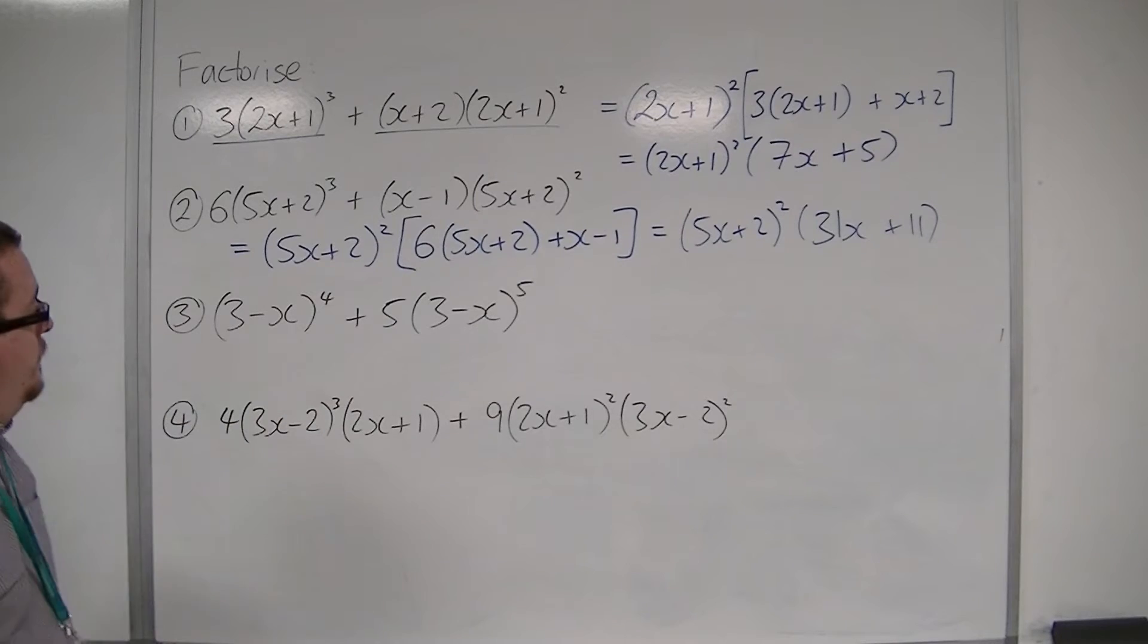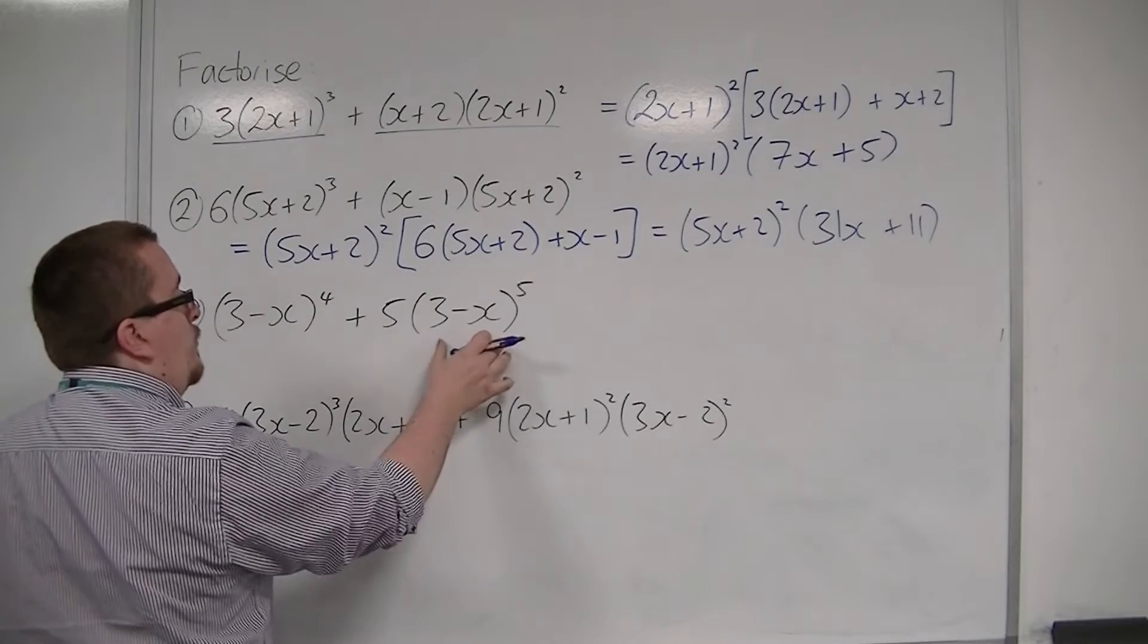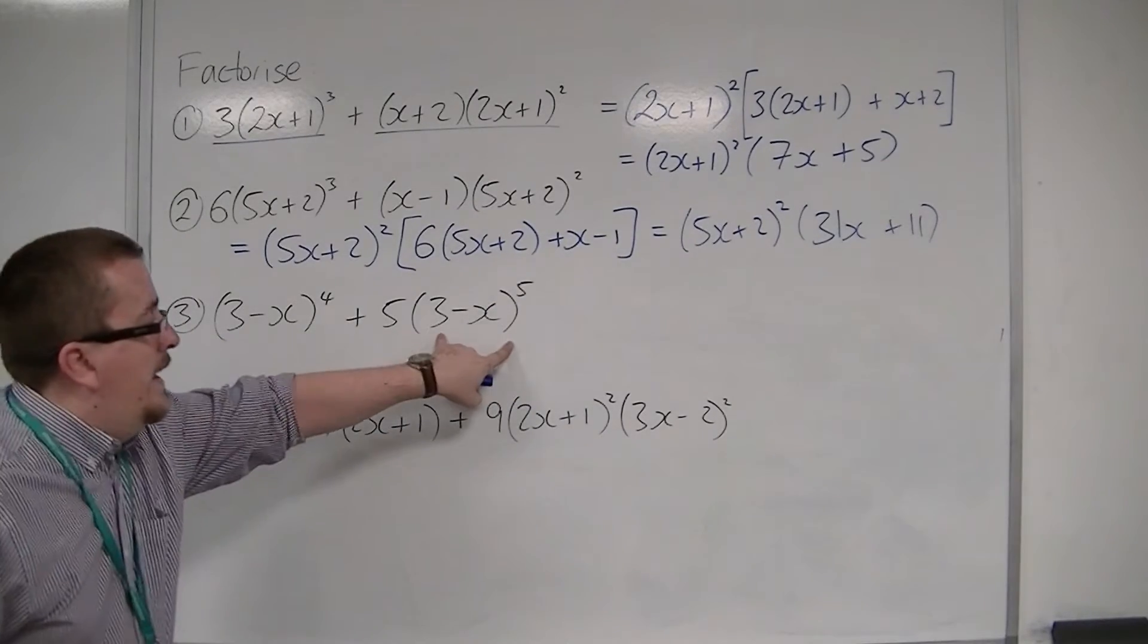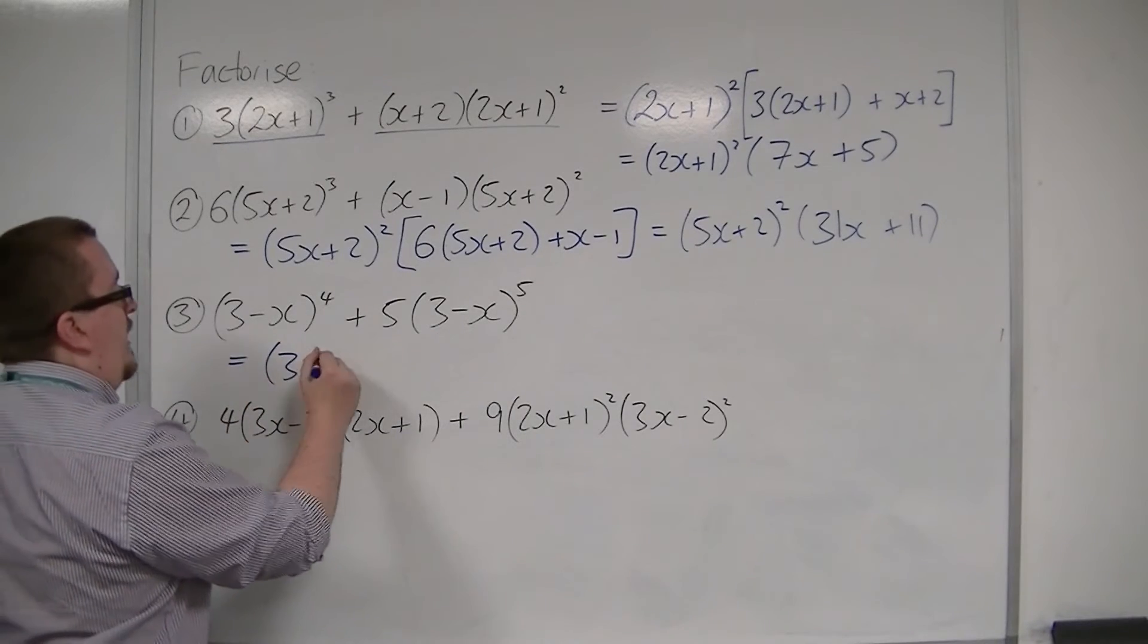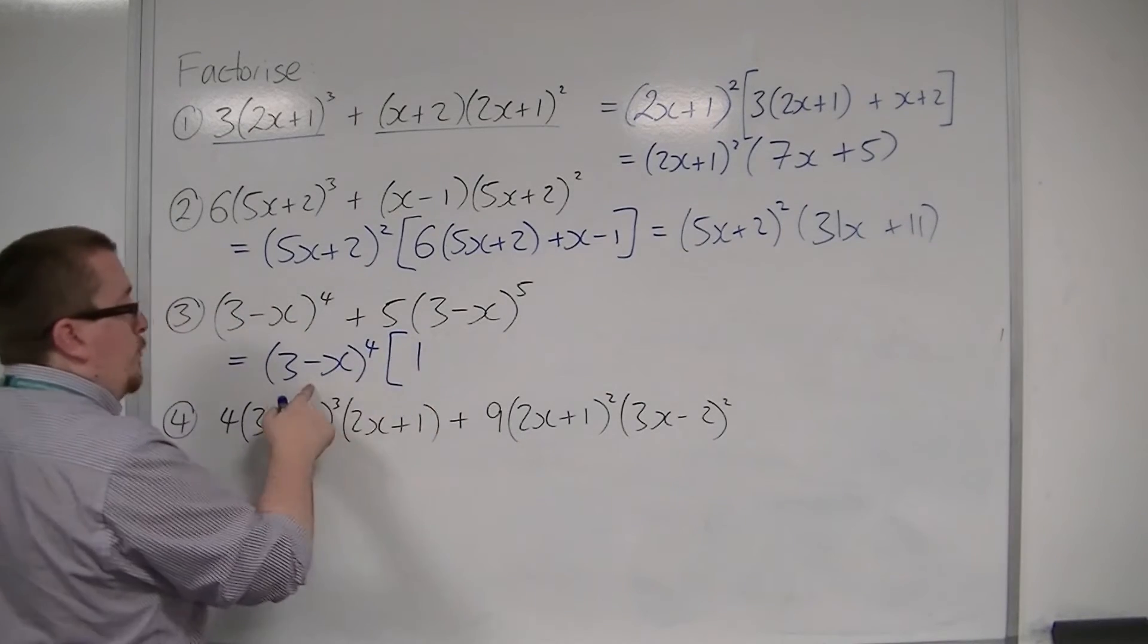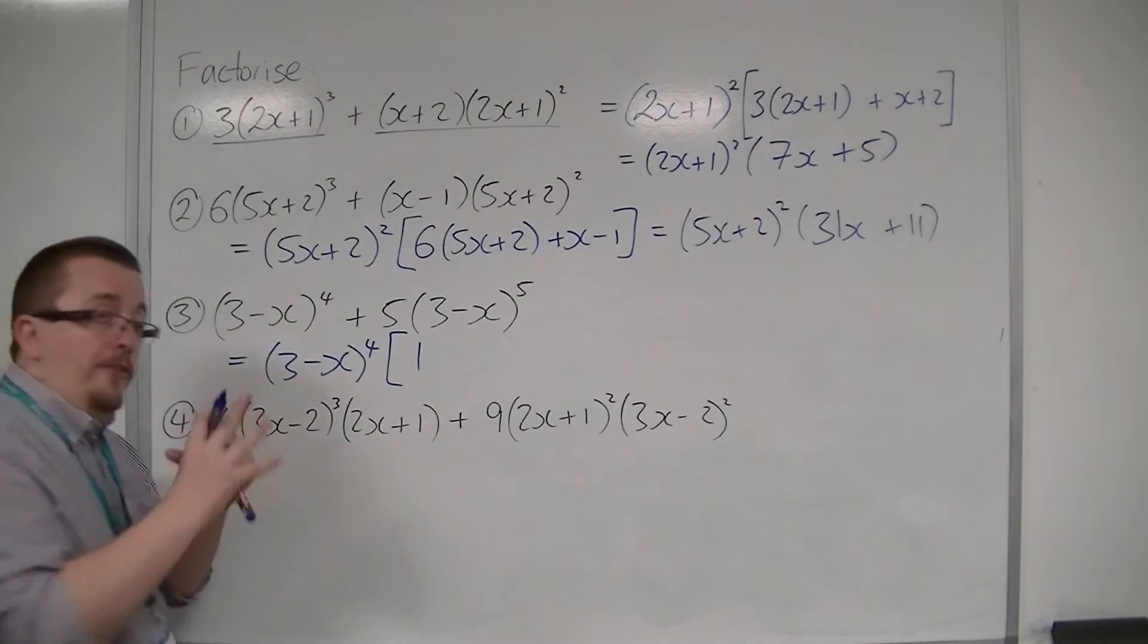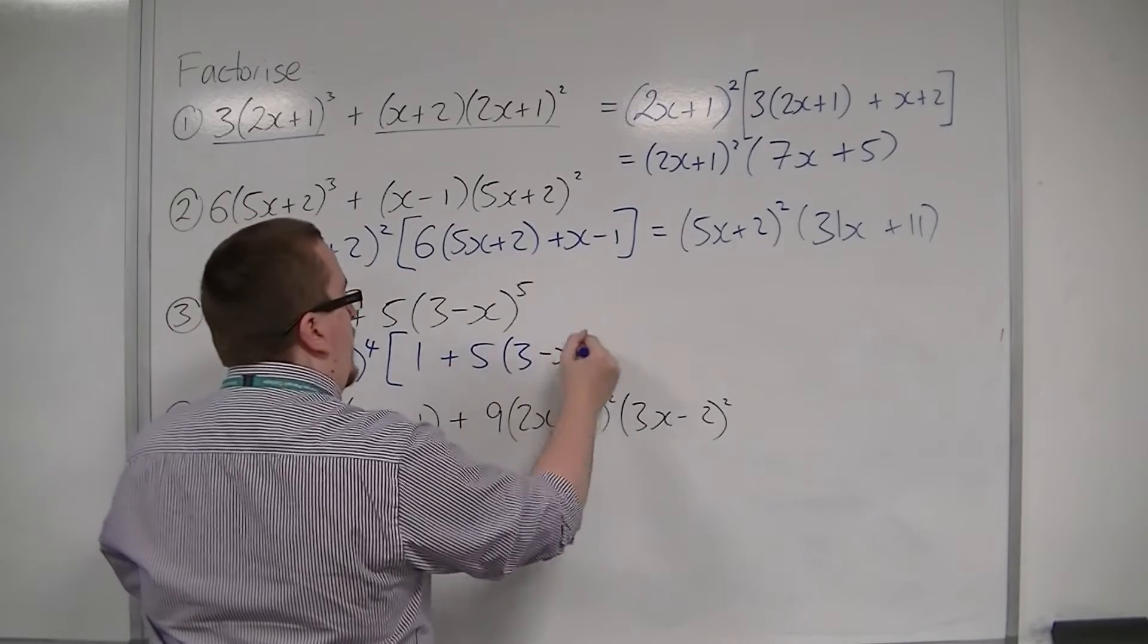Let's go with this next one now. We have a 3 minus x to the power of 4, and we have a 3 minus x to the power of 5. There's four of them there, and at least four of them there, so I can bring out 3 minus x to the power of 4. In the larger bracket, I'll just have 1, because 3 minus x to the 4 times 1 will make that. And then I've got the 5 lots of another remaining 3 minus x.